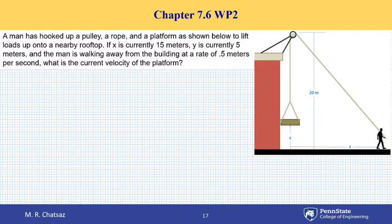It says if X is currently 15 meters and Y is currently 5 meters and the man is walking away from the building at a rate of 0.5 meters per second, what is the velocity of the platform at the instant shown?